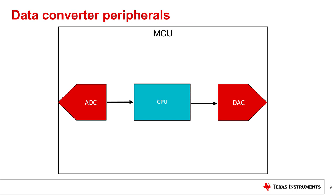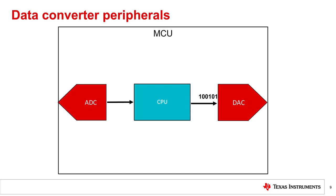For a given application, there are instances where an MCU needs to know the exact voltage coming into the device — that's where data converters come in. They translate voltage signals coming in from analog pins to and from the MCU's language of ones and zeros. Analog-to-digital converters, or ADCs, sample and convert analog signals into digital representation, while digital-to-analog converters, or DACs, take digital data and convert it to analog voltage output.